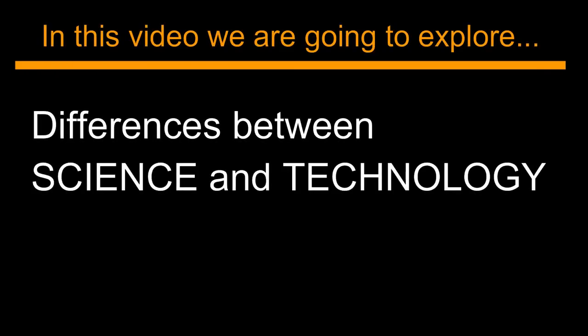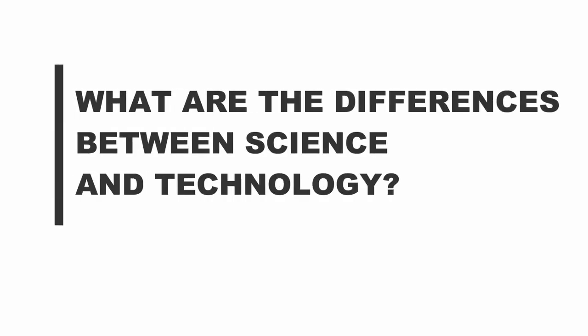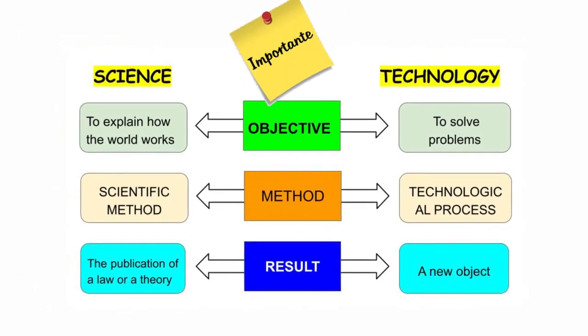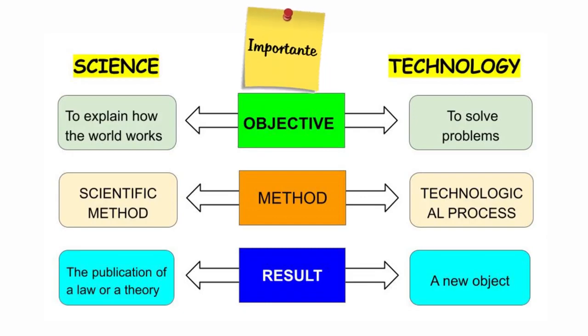In this video, we are going to explore some of the differences between science and technology, because technology and science are actually very different things. What are the differences between science and technology? This table clearly illustrates the differences. As you can see, the objective, the method, and the results are different for science and technology.